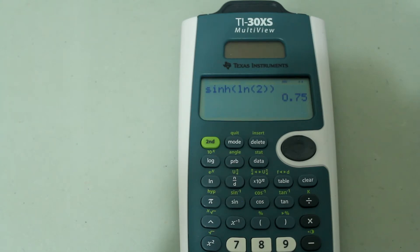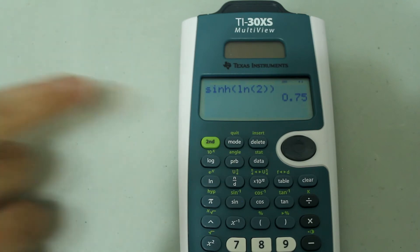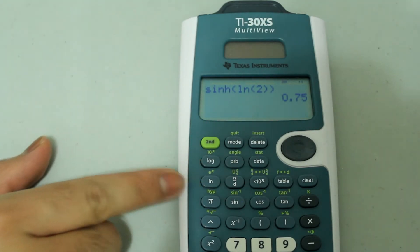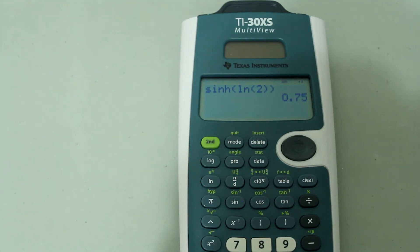It may be beneficial to note that once you press the HYP button, or second and then the PI button, the hyperbolic mode is only there for that one calculation.